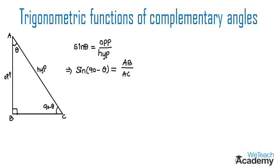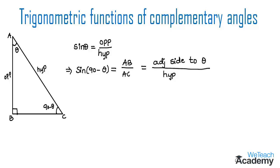Now considering angle theta at vertex A, side BC opposite to angle theta becomes the opposite side and AB becomes the adjacent side to angle theta. So we can write AB as the adjacent side to angle theta divided by hypotenuse side. Adjacent side divided by hypotenuse is the definition for the ratio cos theta.